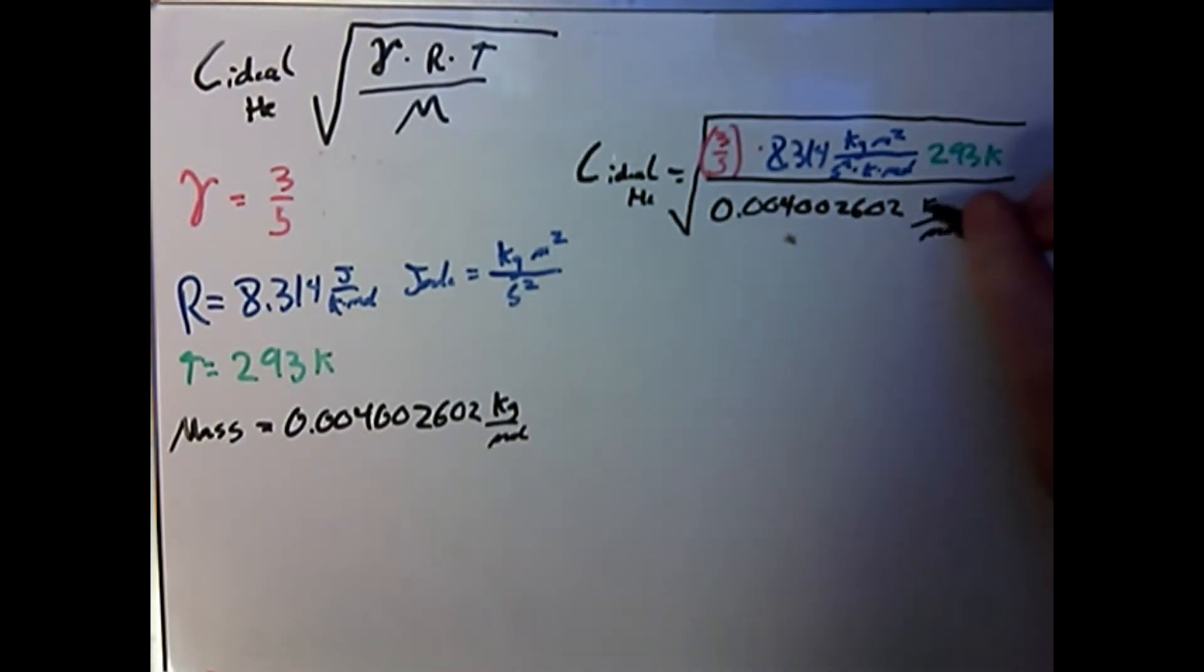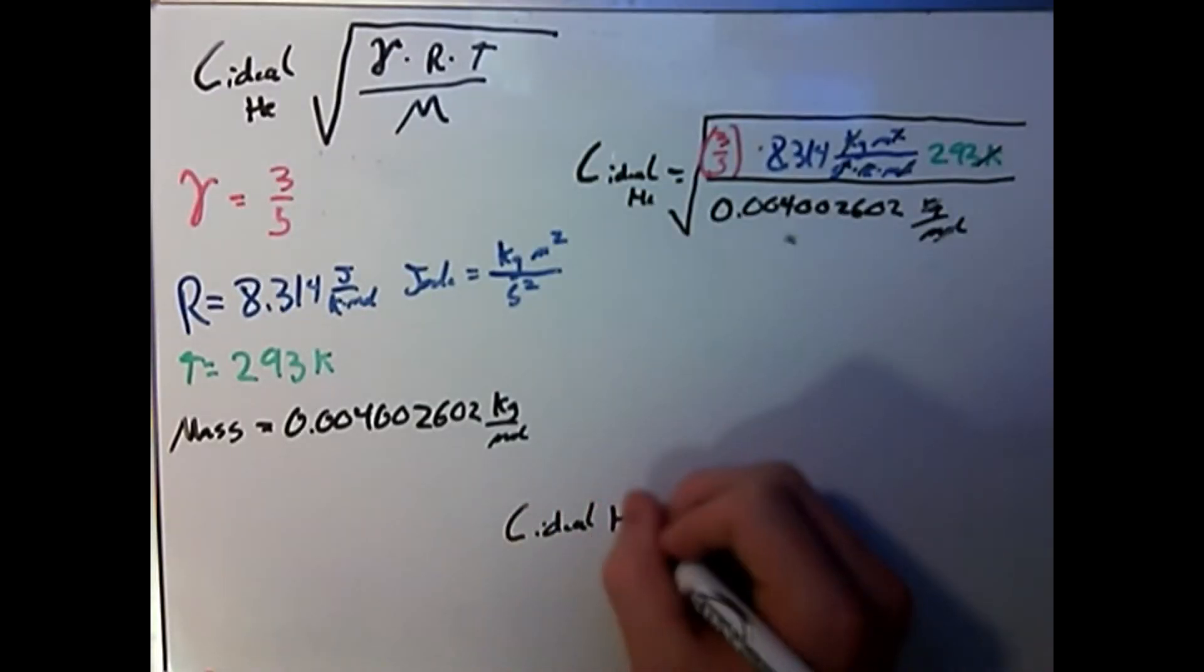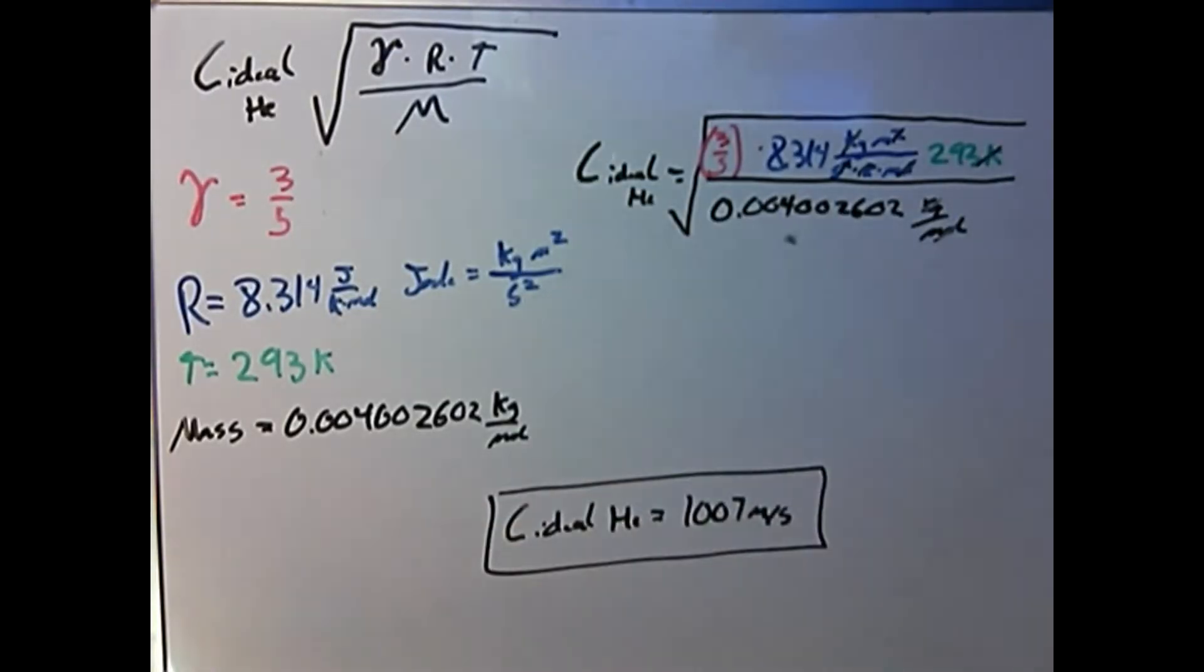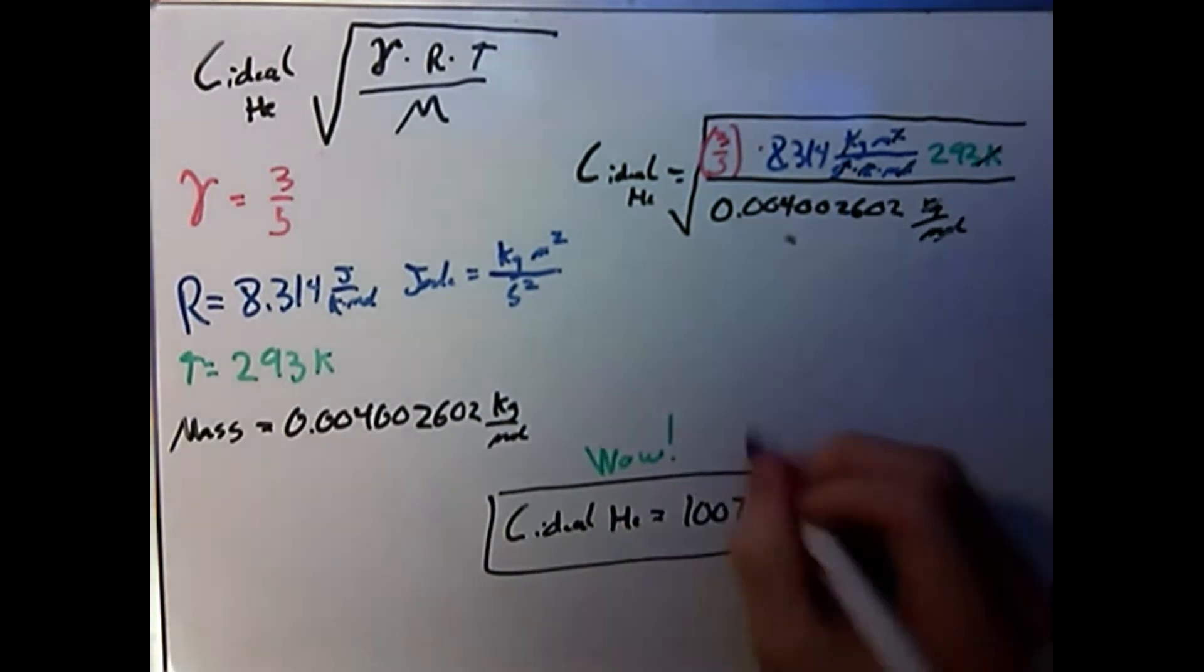Once again, everything cancels, leaving us in meters per second. And after calculating, we'll see that the speed of sound in helium is 1007 meters per second.